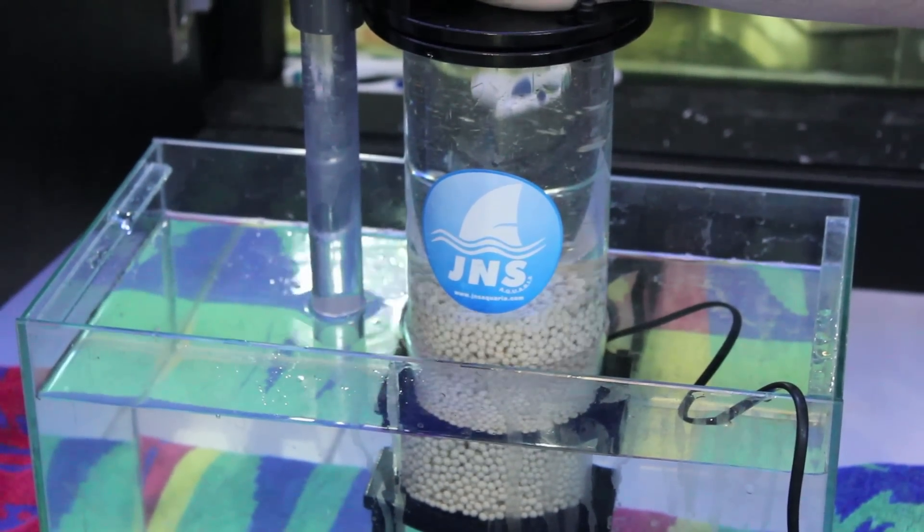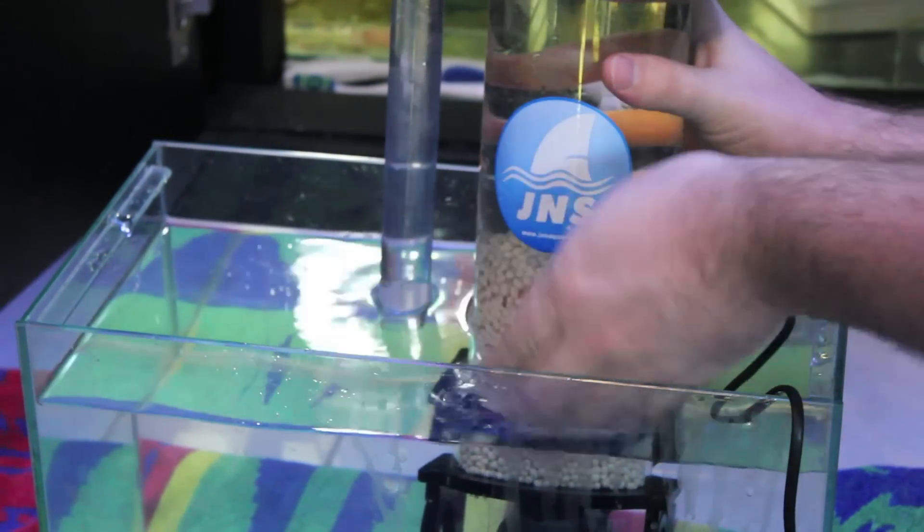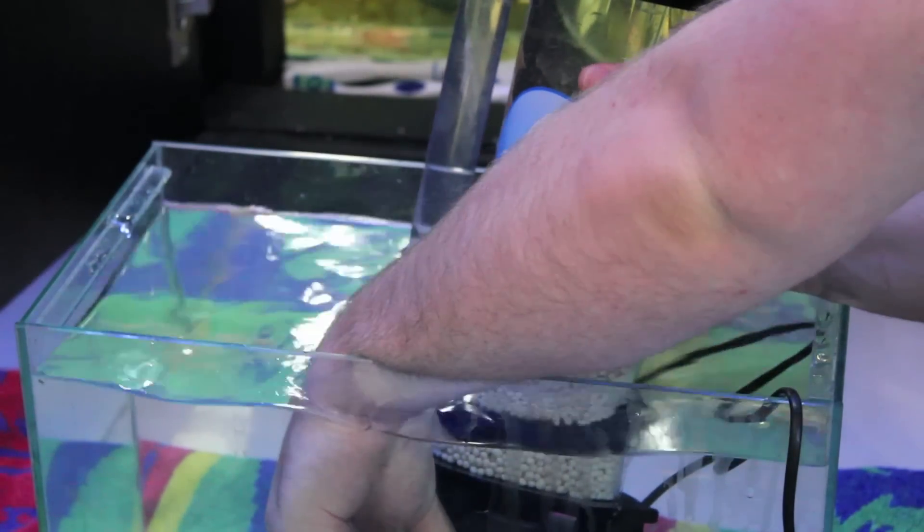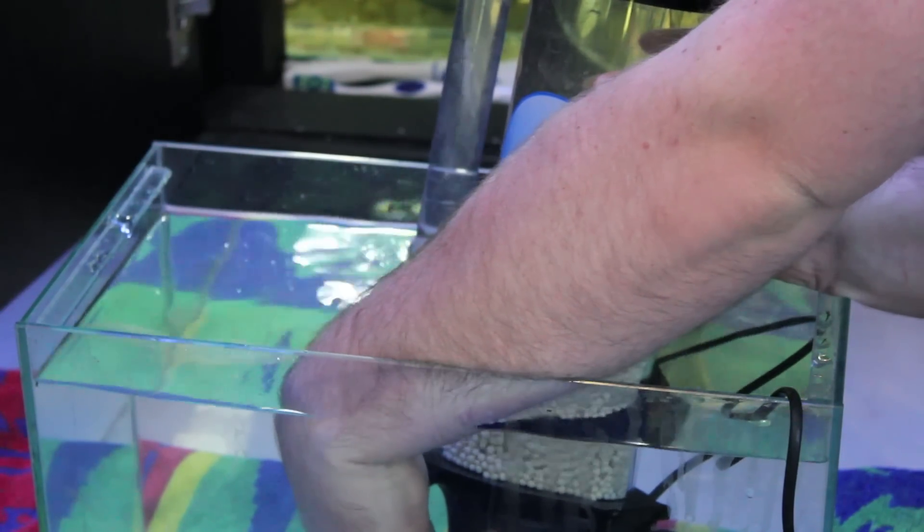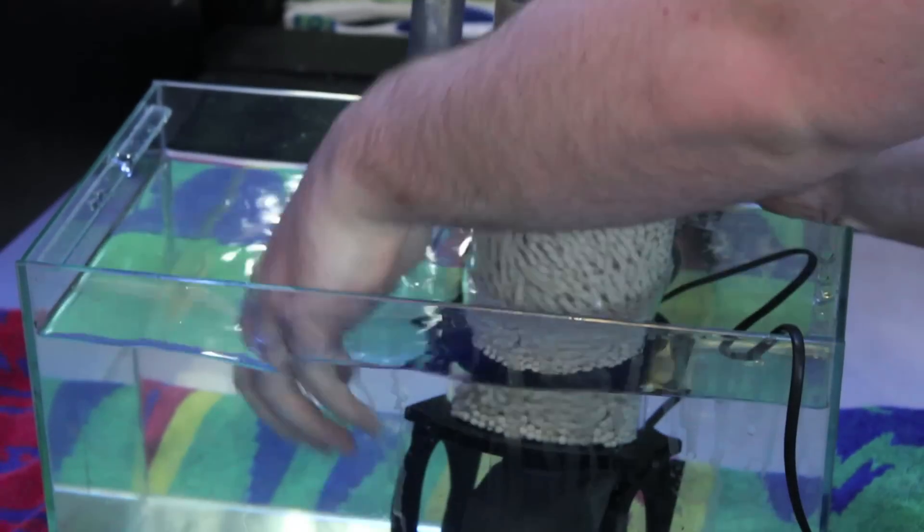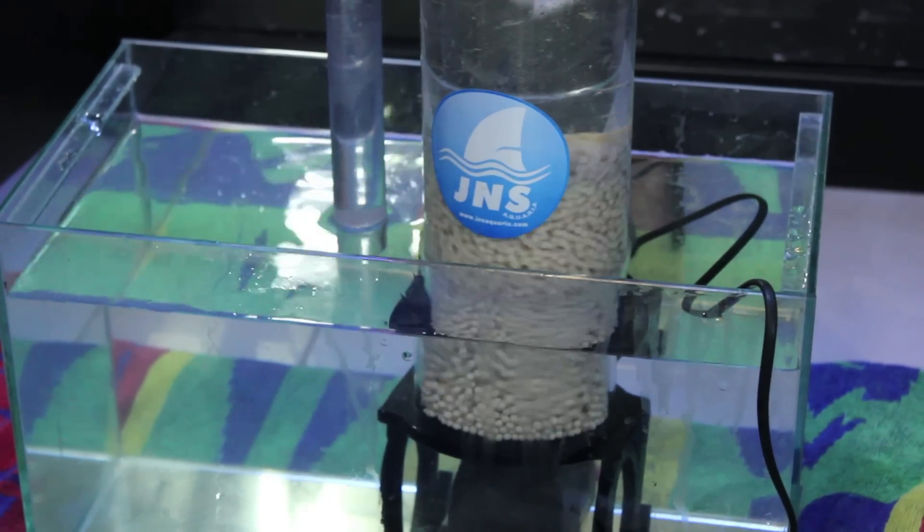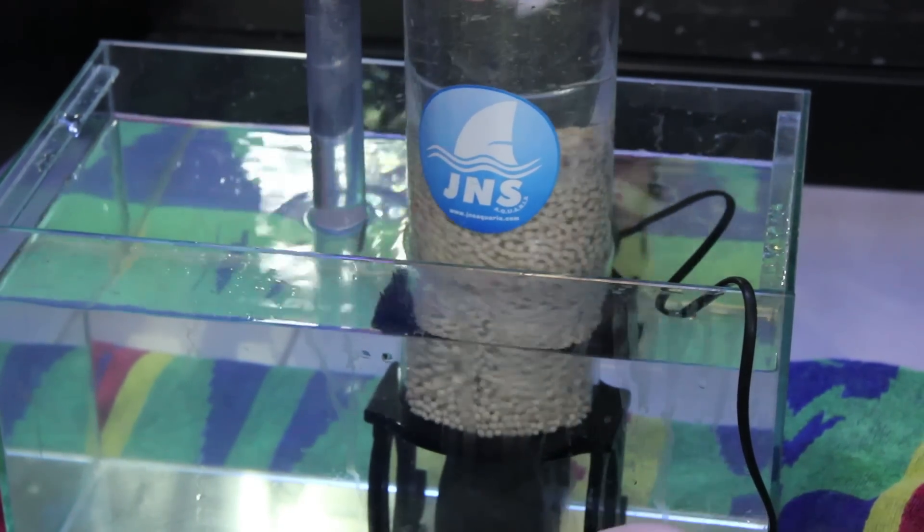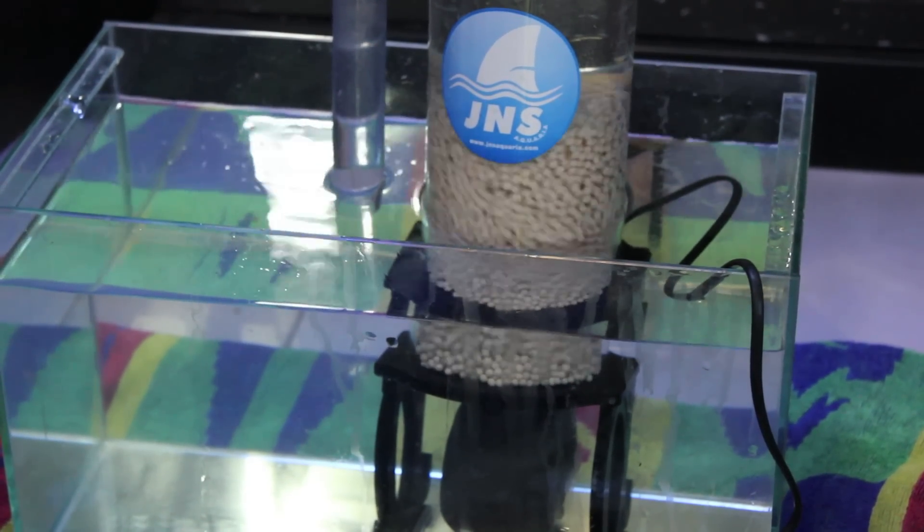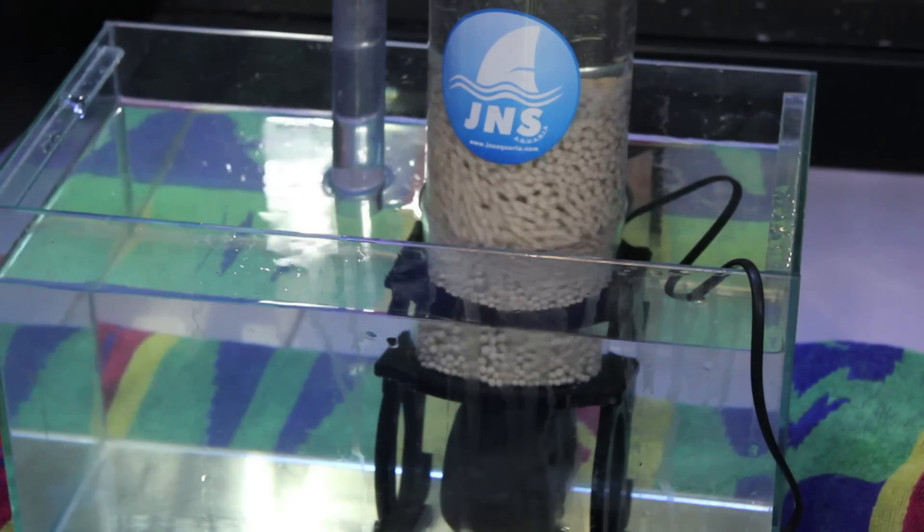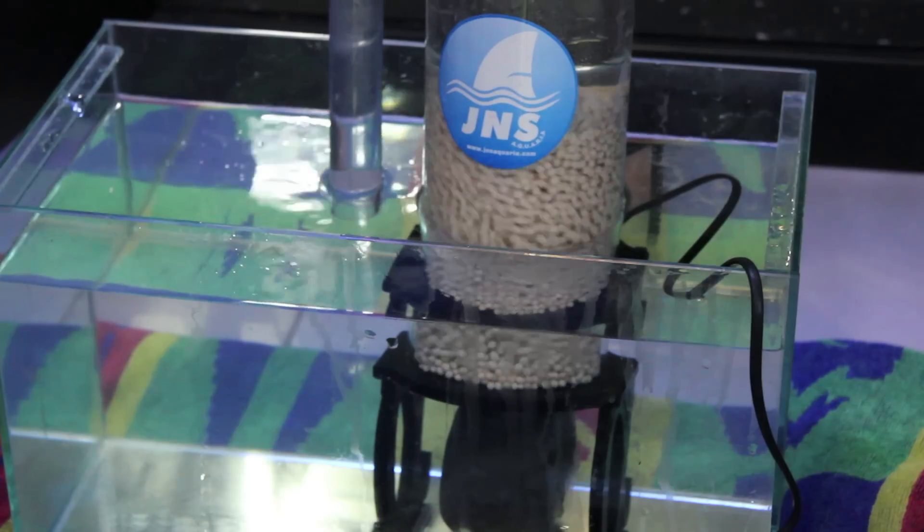As you can see in this case, it's not spinning fast enough, so I'll just turn it up a bit. You adjust the volume of water coming through with the nozzle on the front until your pellets start tumbling in the fashion you would like them to tumble.